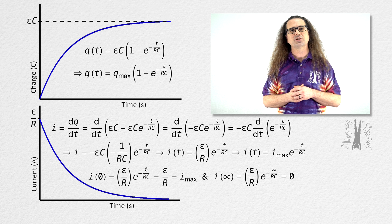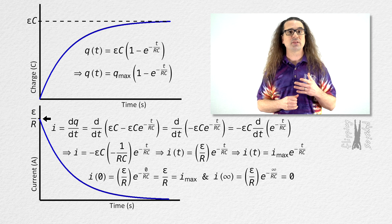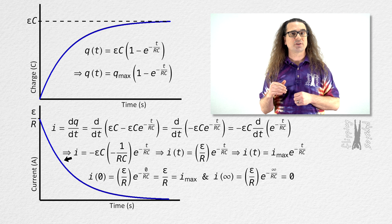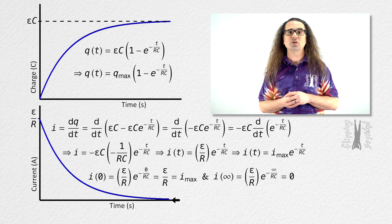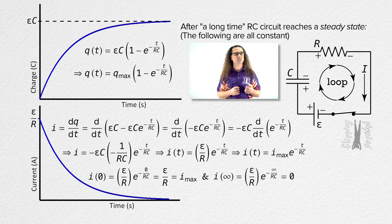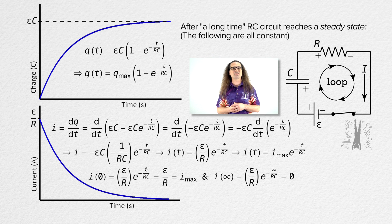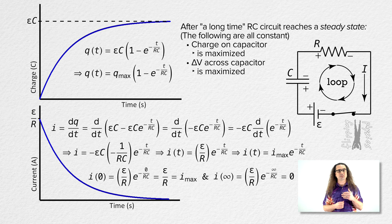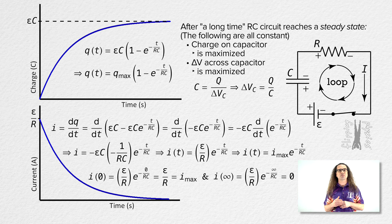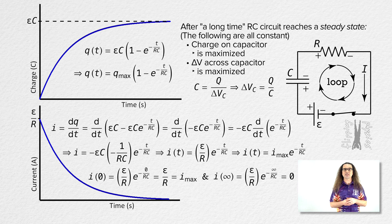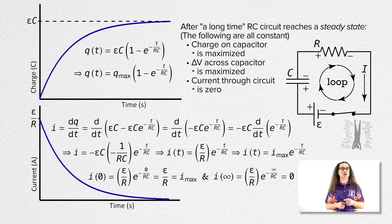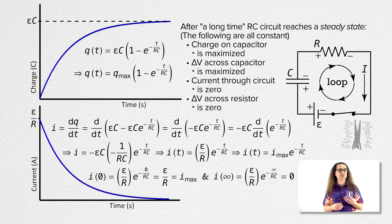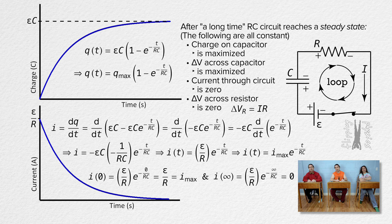This is the graph for that equation. The initial current is at a maximum value of EMF divided by resistance, and the current decreases according to the equation we solved for, asymptoting at zero. After a long time, the RC circuit reaches a steady state: the charge and electric potential difference across the capacitor are at their maximum values, the current is zero, and the electric potential difference across the resistor is also zero because it equals current times resistance.